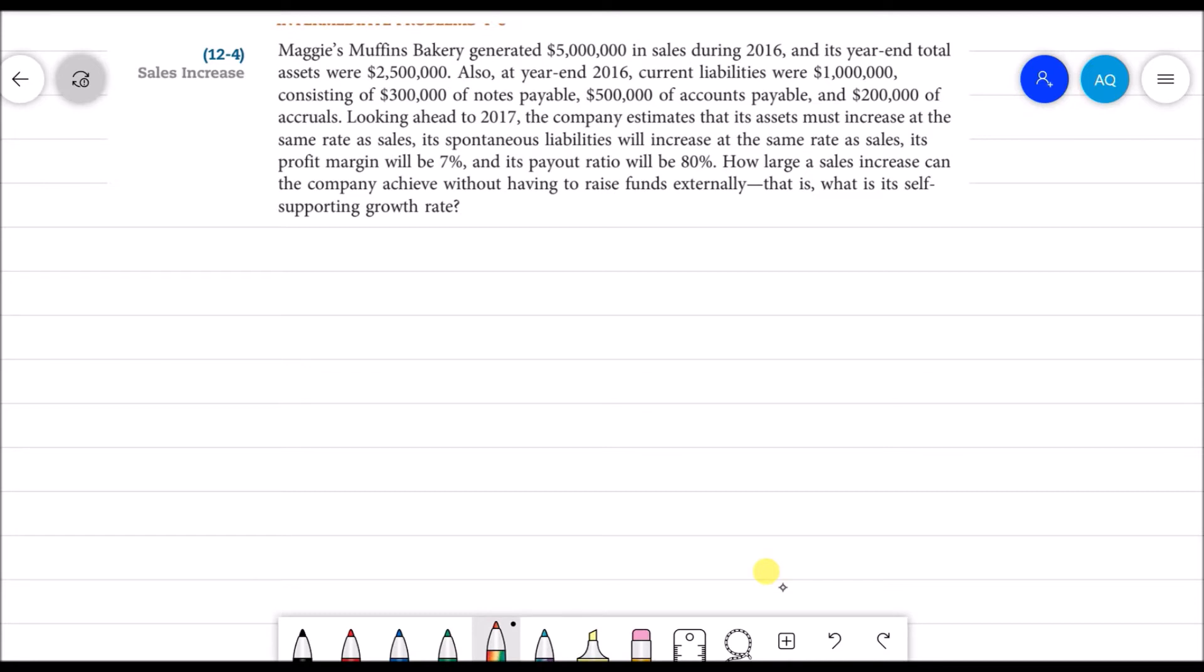Consisting of $300,000 of notes payable, $500,000 of accounts payable, and $200,000 of accruals. Looking ahead to 2017, the company estimated that its assets must increase at the same rate as sales, its spontaneous liabilities will increase at the same rate as sales, its profit margin will be 7%, and its payout ratio will be 80%. How large a sales increase can the company achieve without having to raise funds externally? That is, what is its self-supporting growth rate?